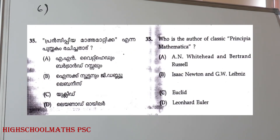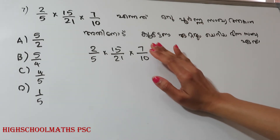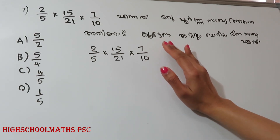Who is the author of the classic Principia Mathematica? The options are: A.N. Whitehead and Bertrand Russell, Isaac Newton, G.W. Leibniz, Euclid, Leonard Euler. Principia Mathematica is written by A.N. Whitehead and Bertrand Russell.